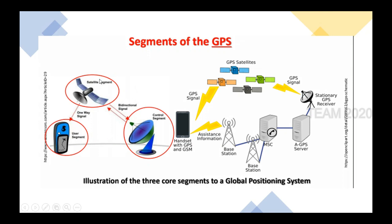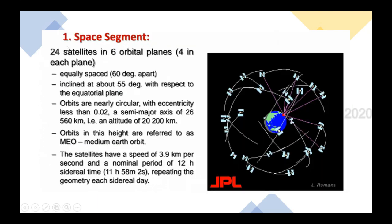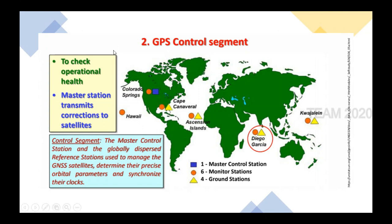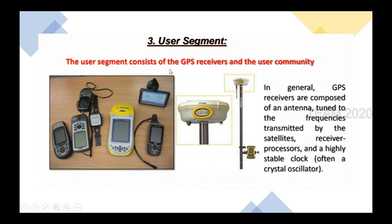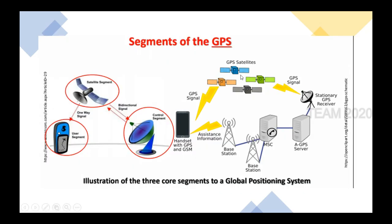The space segment refers to the satellites placed above the Earth's surface at 20,200 kilometers, with an inclination of around 55 degrees. The control segment consists of a master station, base stations, and control stations. The user segment can be any device, machinery, or automobile with GPS receivers. An illustration of these three core segments of GPS is shown in this particular figure.